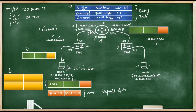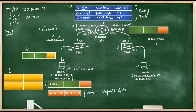You may wonder that you have never configured a default gateway on your PC or laptop, yet everything works fine. That is the job of DHCP — Dynamic Host Configuration Protocol — which assigns the IP address and default gateway to your PC. DHCP is a different topic and we can discuss it in another video.